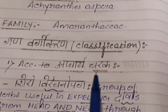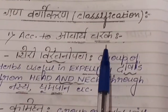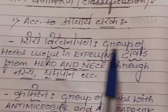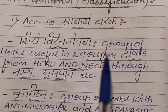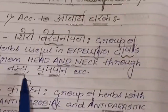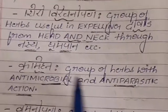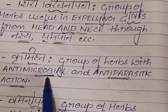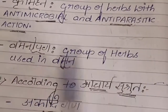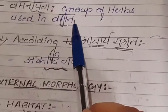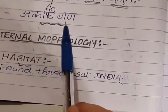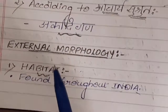Ganavargi or classification of the drug: according to Acharya Charaka it is divided into the following groups — first, Shirovirechanopaga, a group of herbs useful in expelling doshas from the head and neck through Nasya (nasal instillation) or Dhumapana; second, Krimighna, a group of herbs with antimicrobial and anti-parasitic action; third, Vamanopaga, a group of herbs useful in Vamana (vomiting treatment). According to Acharya Sushruta it is divided into Arkadigana.